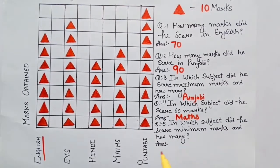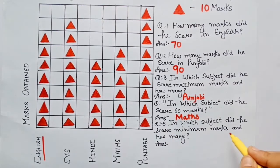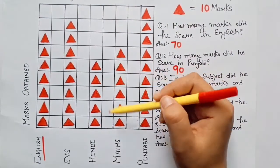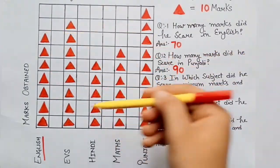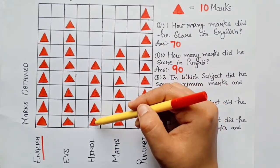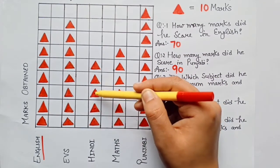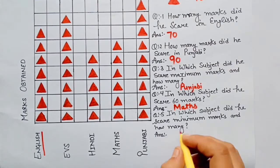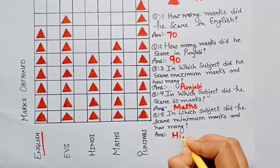Now the fifth question: in which subject did he score minimum marks and how many? Usne kaun se subject mein sabse kam marks liye hain? As we can see, in Hindi the number of triangles is fewest: 10, 20, 30, 40, 50. So the answer is Hindi with 50 marks.